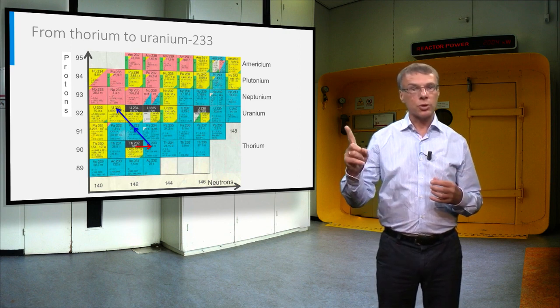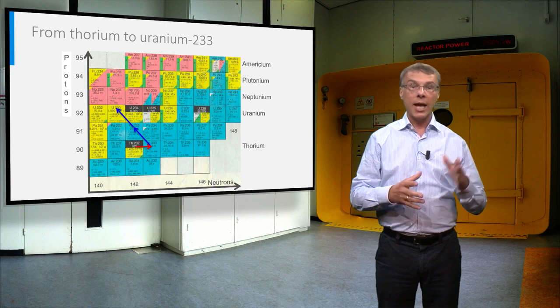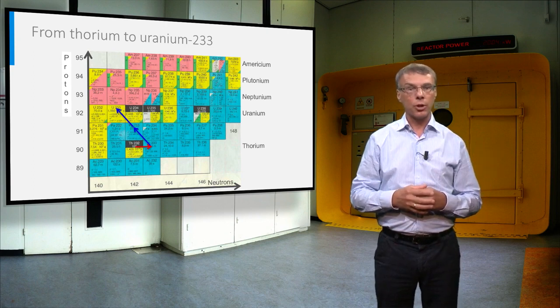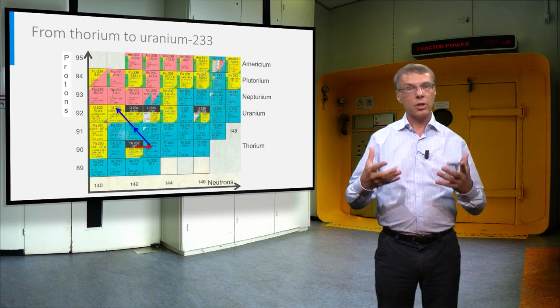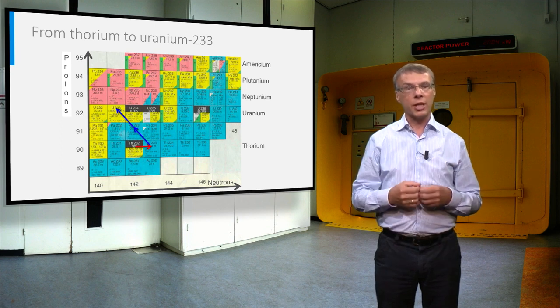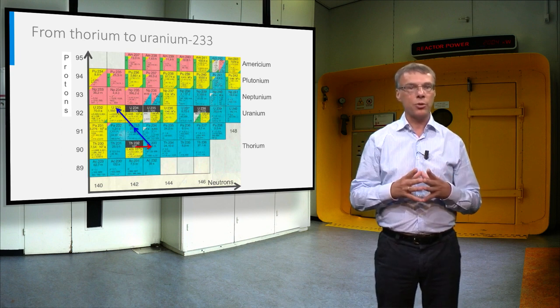Because we need one neutron to sustain the fission chain reaction, and another one to convert thorium into uranium, we can have a sustained fission chain reaction only if the reactor is extremely efficient with neutrons.